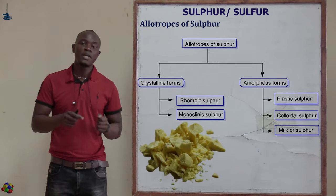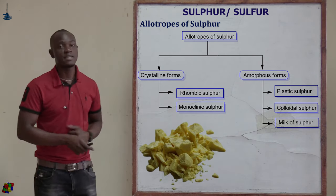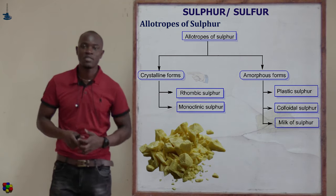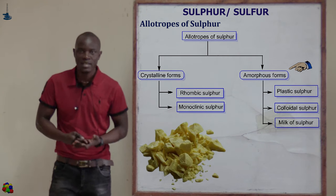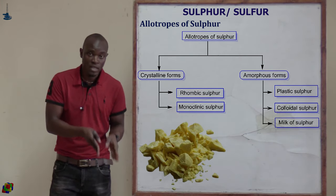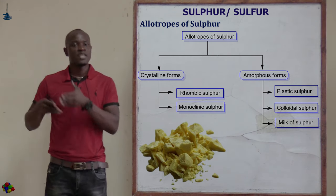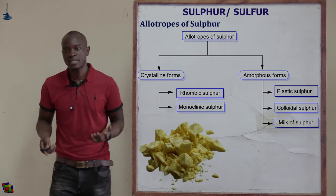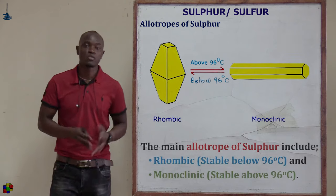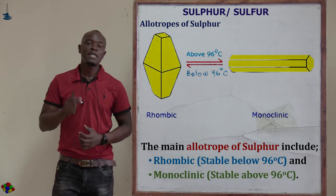We have two main forms of sulfur: crystalline sulfur and amorphous sulfur. The crystalline sulfur mainly comprises rhombic sulfur and monoclinic sulfur. The amorphous sulfur comprises plastic sulfur, colloidal sulfur, and milk of sulfur. In this session, we will focus on the two main allotropes studied in high school: rhombic and monoclinic sulfur.